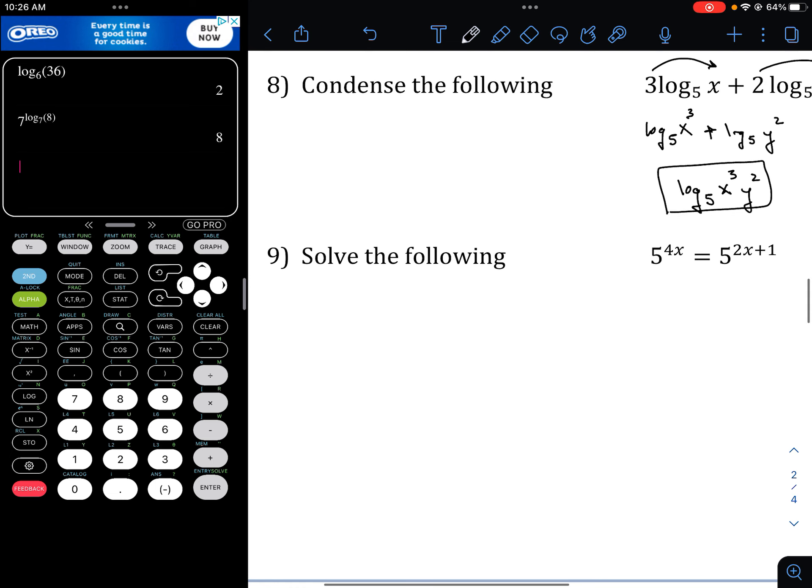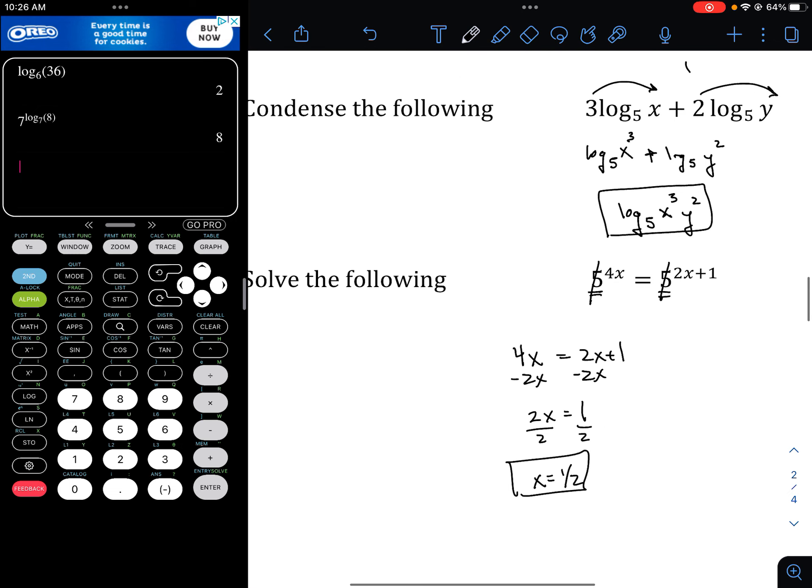Solving. Pretty easy solving questions. As long as those numbers match out, they cancel. So, we're just looking at 4x equals 2x plus 1. Solving for x. So, minus 2x. 2x equals 1. And divide by 2. x equals 1 half.